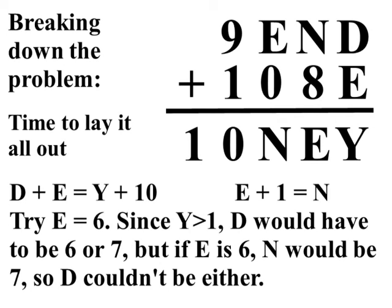What about E equals 6? As mentioned before, Y plus 10 has got to be 12 or greater, which would mean that for E to be 6, D would have to be 6 or 7. And since we're arguing what would happen if E was 6, that means D couldn't be 6, which leaves D equals 7. But N is one more than E. So, if E is 6, N would have to be 7 too. And D and N can't both be the same digit. So, we've just ruled out E equals 6.